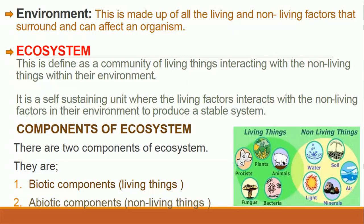Now let's look at ecosystem. An ecosystem is defined as a community of living things interacting with the non-living things within their environment. It is a self-sustaining unit where the living factors interact with the non-living factors in the environment to produce a stable system. When the living things and non-living things interact within an environment, they form an ecosystem. For example, you can have an ecosystem in a forest or in a river, where plants, animals, carbon dioxide, oxygen, and water all interact.